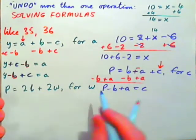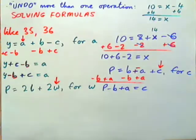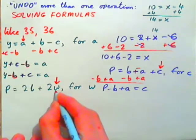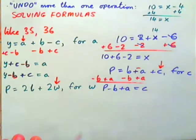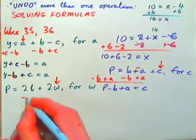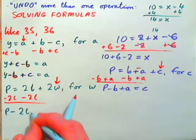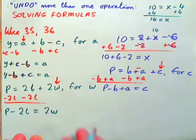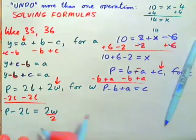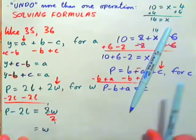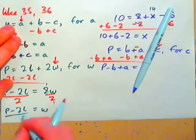Now look at P equals 2L plus 2W — solve for W. First, put an arrow above the W. W has been multiplied by 2, then 2L is being added on. Always do the last operation first, so subtract 2L from both sides first. We get P minus 2L equals 2W. Now divide both sides by 2 — the 2's cross-cancel — giving P minus 2L all over 2 equals W.